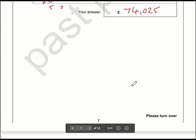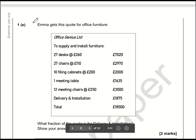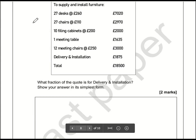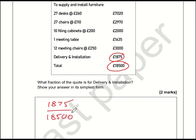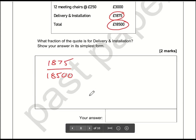So if we're increasing by 5.75%, we are increasing by 4,025. The calculation is simply 70,000 plus 4,025, which comes to 74,025 pounds. A challenging question. Now question 1E: what fraction of the quote is for delivery and installation? The quote comes to 18,500 and the delivery is 1,875. As a fraction, it's simply 1,875 out of 18,500.